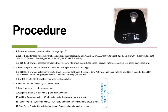Procedure. First I took 12 sterilized mason jars and divided them into four groups of three. Then I labeled the mason jars with identifiers based on experimental group. I then added 600 milliliters of water collected from the Little Creek Reservoir to the jars in Group A. Then I poured 500 milliliters of water collected from the reservoir to groups B, C, and D.